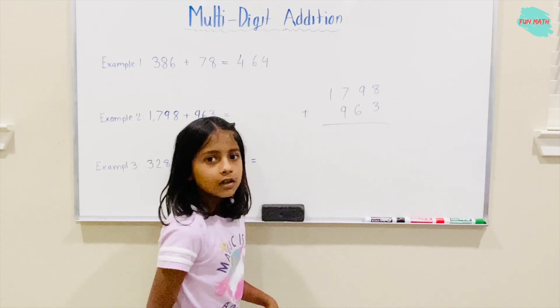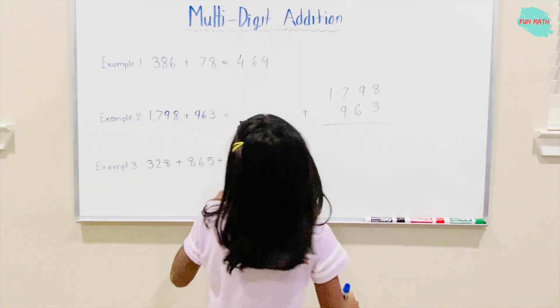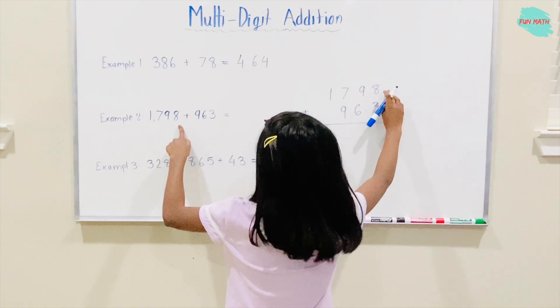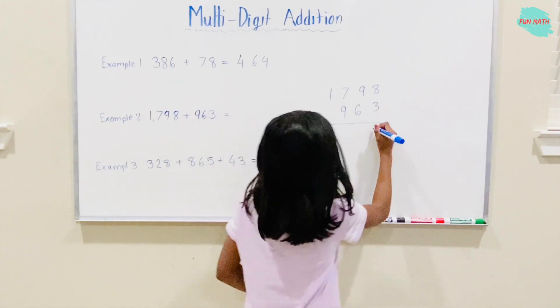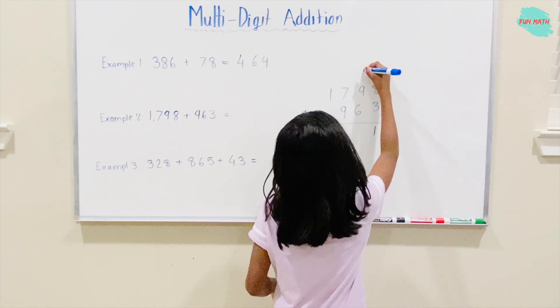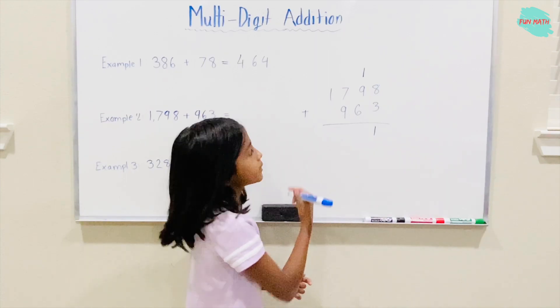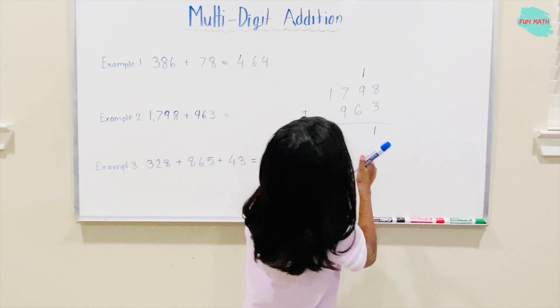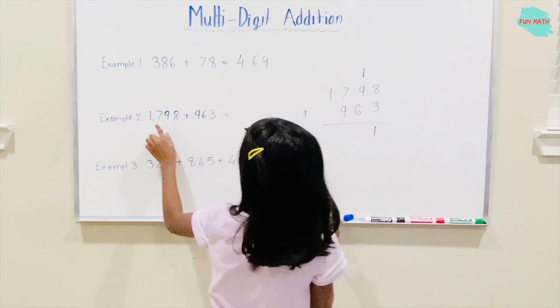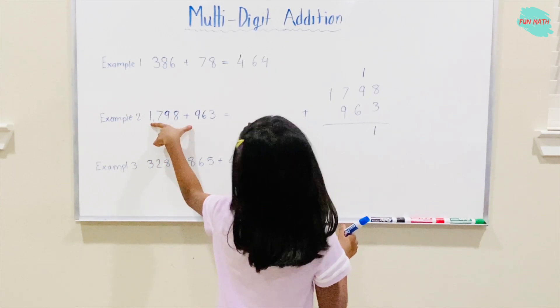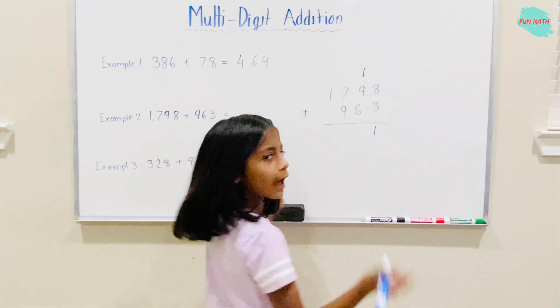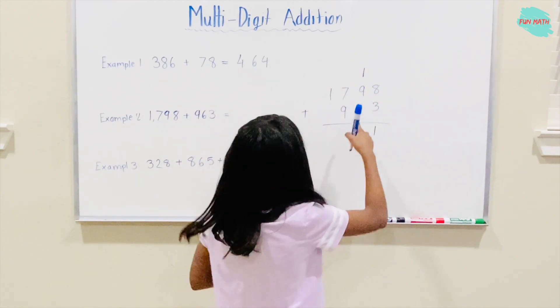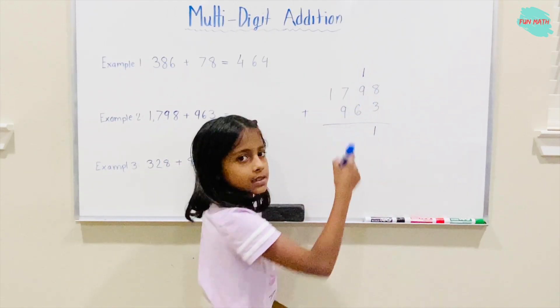All right. 8 plus 3 is 11. One will go under here. The other one will carry up. Now 9 plus 6 plus 1. 9 plus 1 is 10. 10 plus 6 is 16.